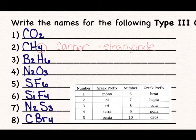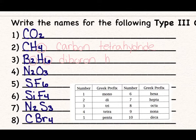Moving on: we have 2 borons, so we say diboron. Notice that you do nothing to change the ending of that nonmetal. Then we have 6 hydrogens — the prefix for 6 is hexa — so we say hexahydride.